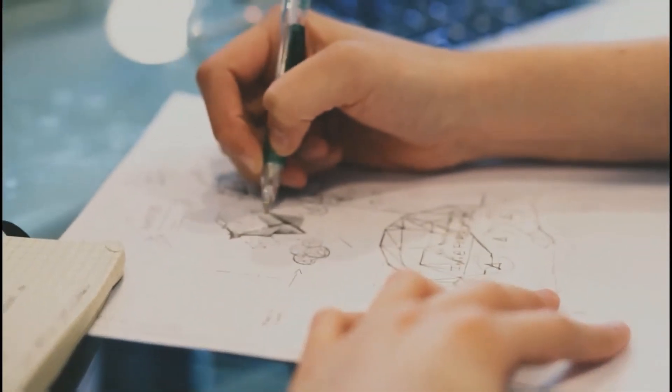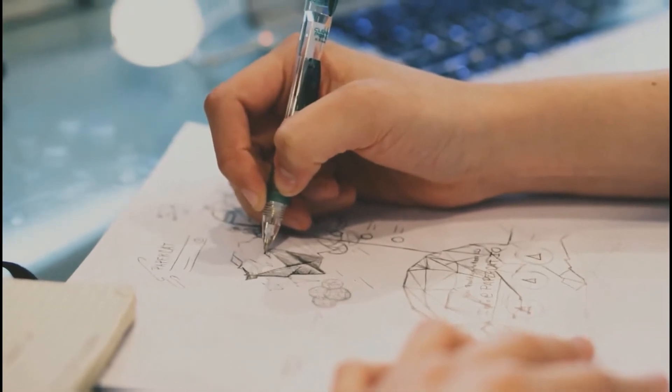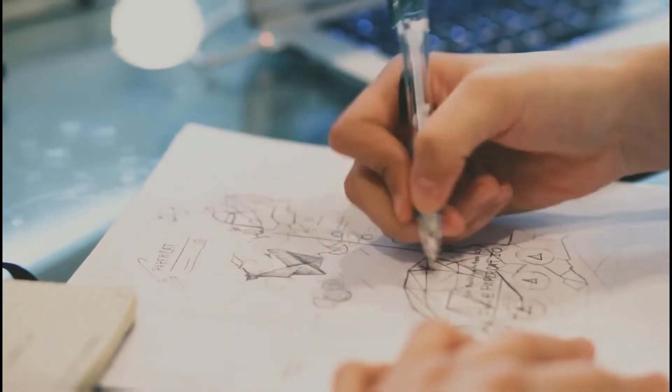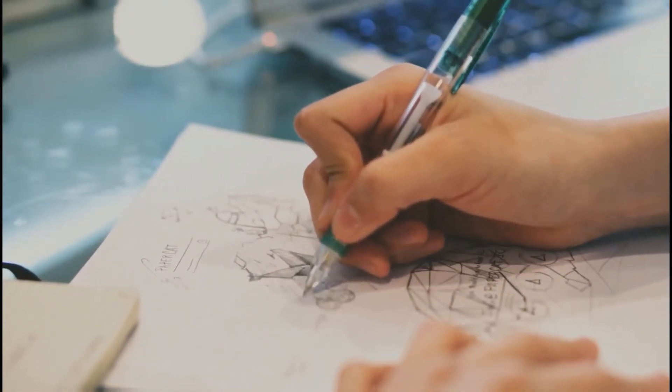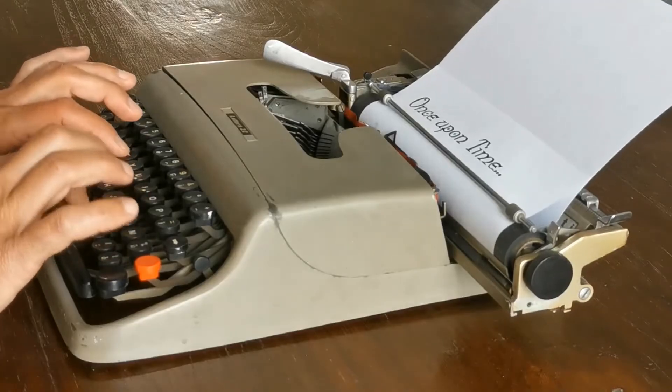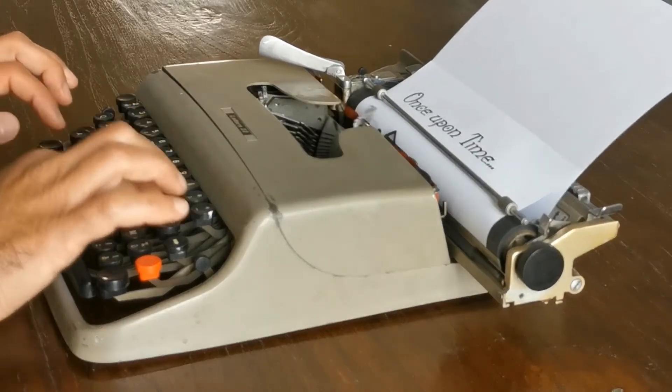The first generation of the typewriter was invented in 1829. At that time, there were no other means by which people could write letters or document anything other than writing. A typewriter is a manual machine with keyboards, used for typing out data.